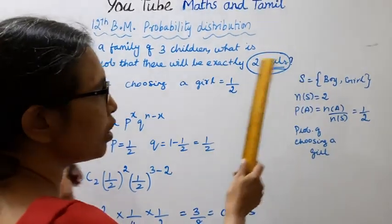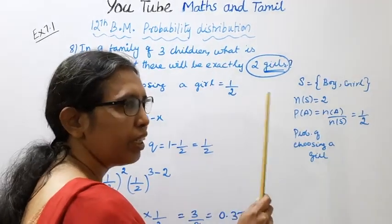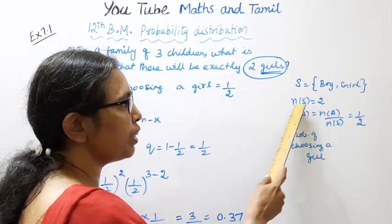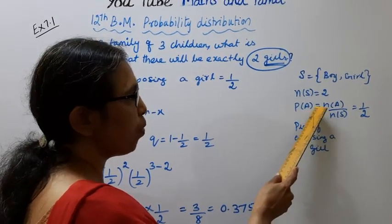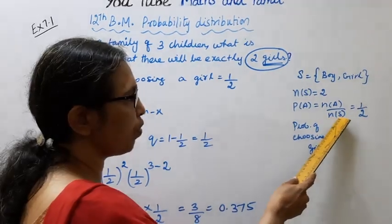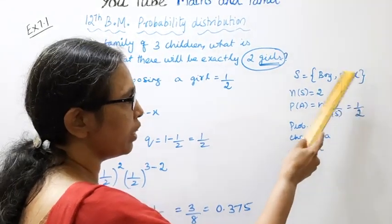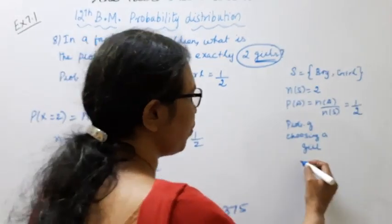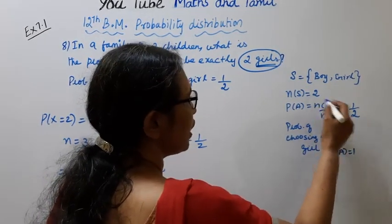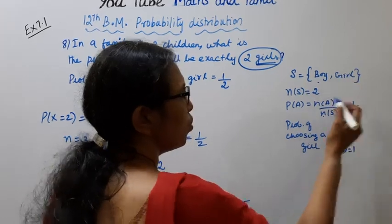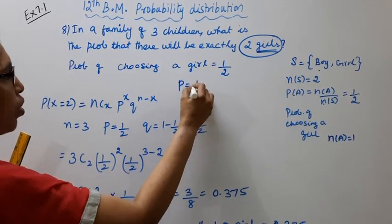The same sample space contains boy and girl, so n of S is 2. The probability of choosing a girl is P of A, where P of A equals n of A by n of S. n of A is 1 and n of S is 2, therefore P equals 1 by 2.